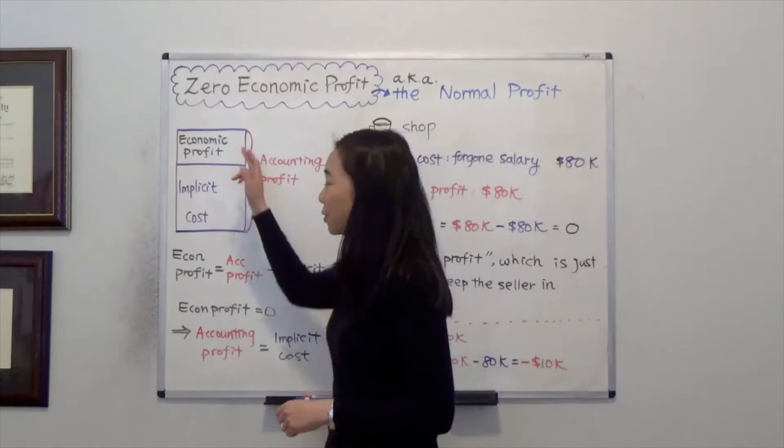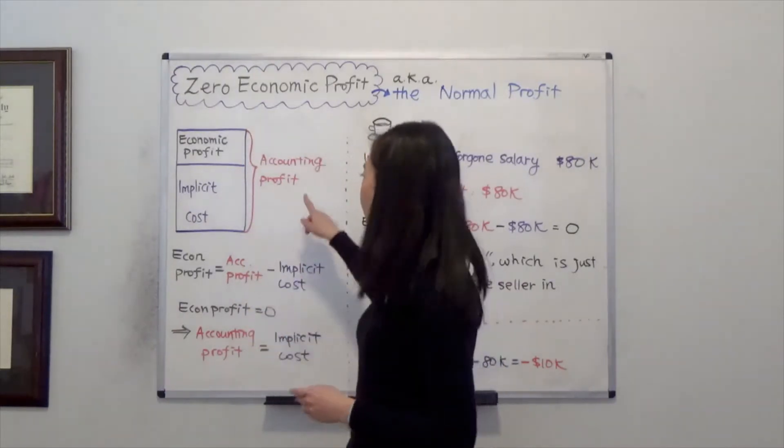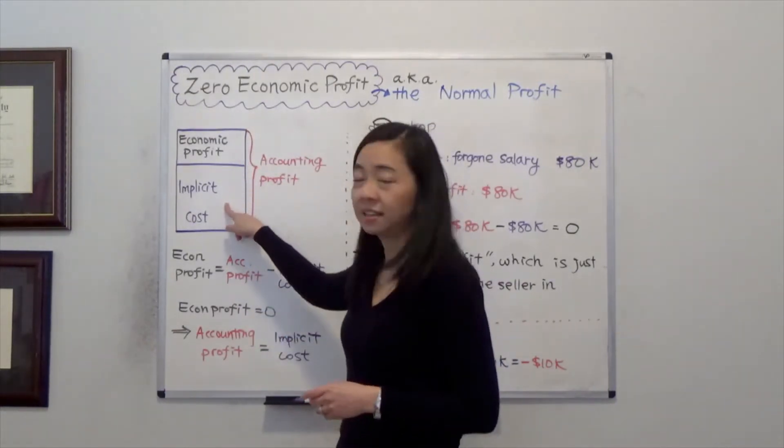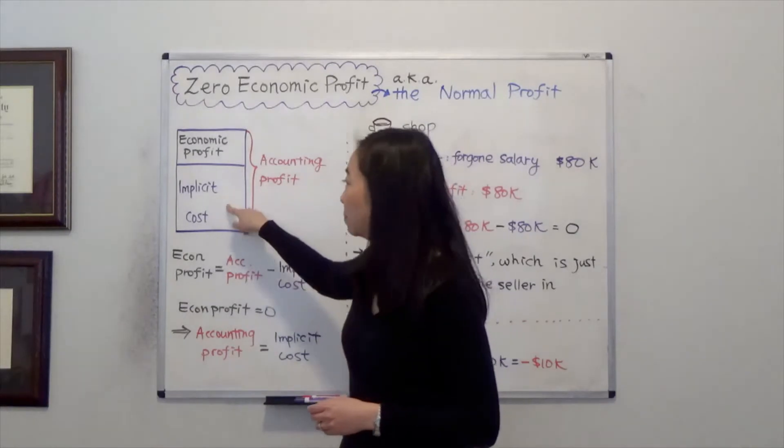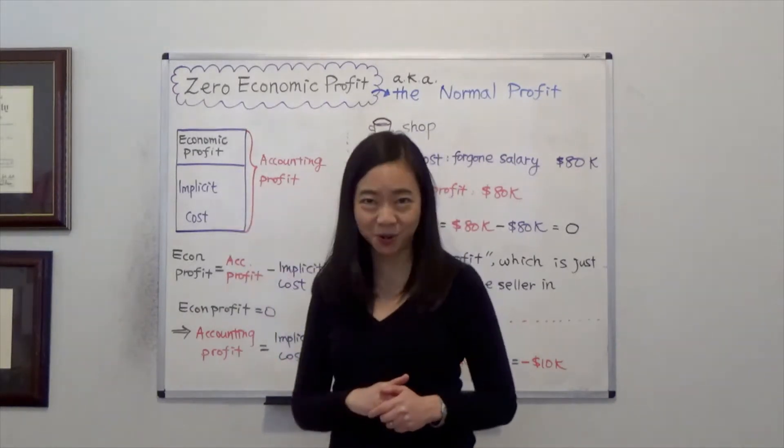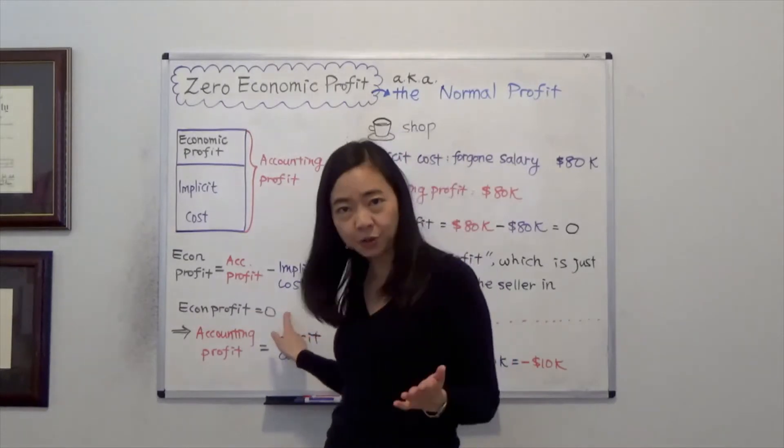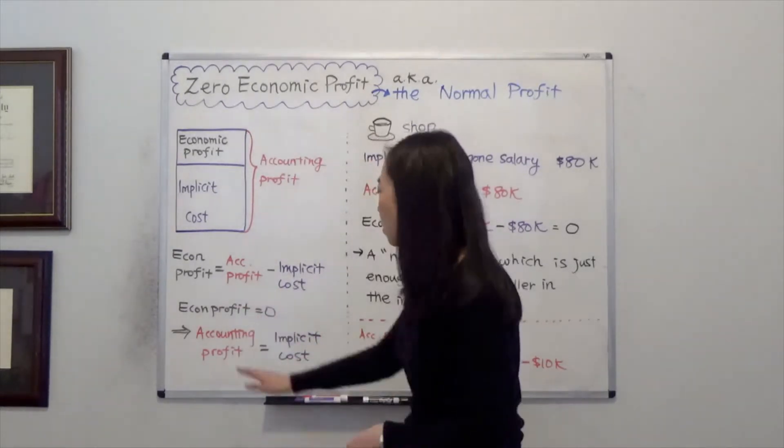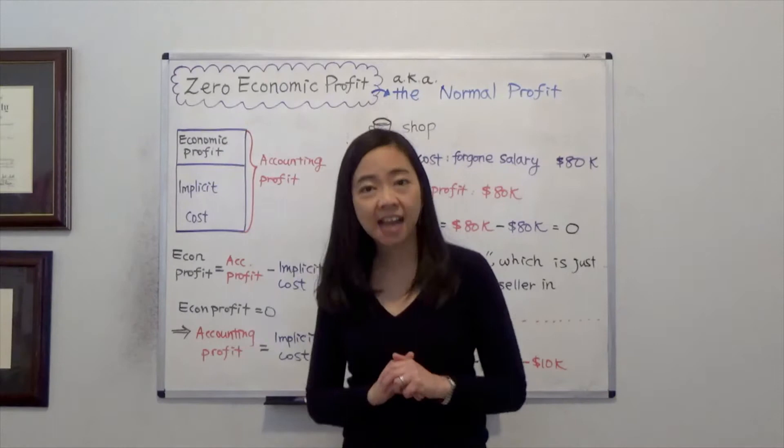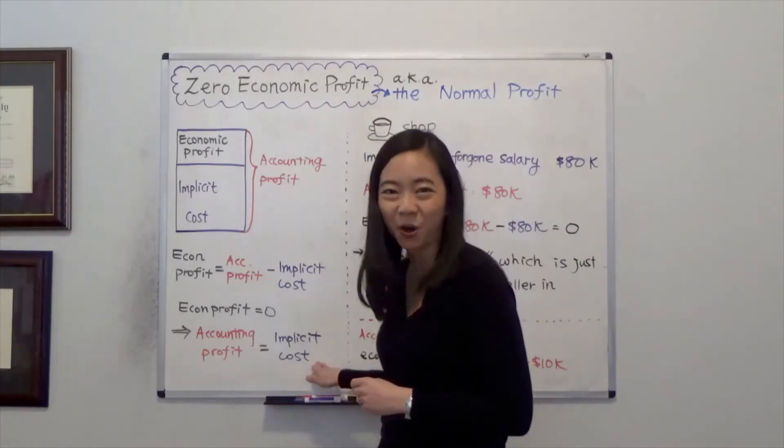We know that economic profit is equal to accounting profit minus implicit cost, and implicit cost is your opportunity cost. Therefore, when your economic profit is equal to zero, that just means that your accounting profit is exactly equal to your implicit cost.